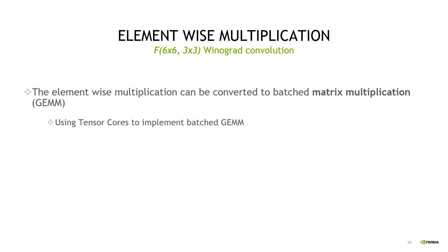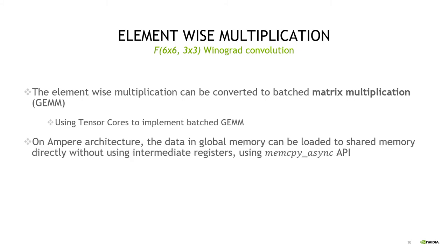The elementwise multiplication part of Winograd Convolution can be converted to batched matrix multiplication using Tensor Cores. On Ampere architecture, using the memory copy-async API, data in global memory can be directly loaded into shared memory without intermediate registers. This API enables CUDA kernels to overlap computation with data movement, and we design a load-and-compute pipeline to hide memory latency.